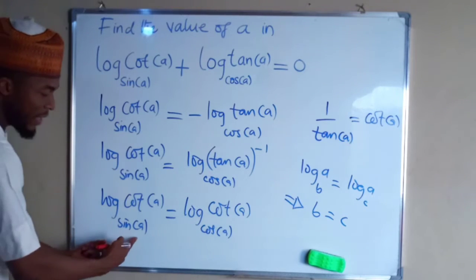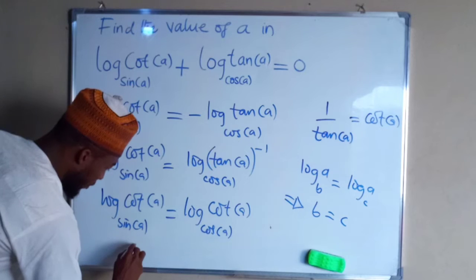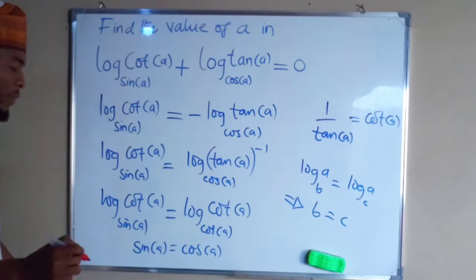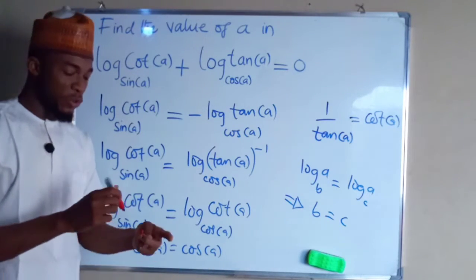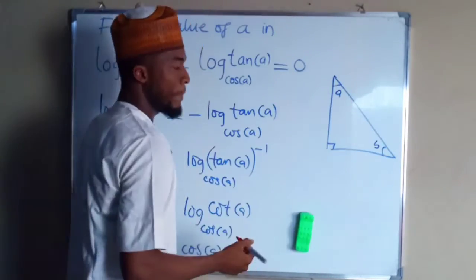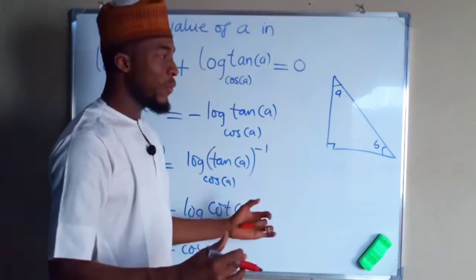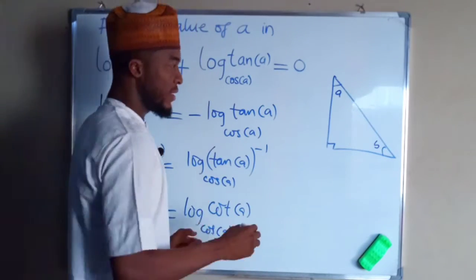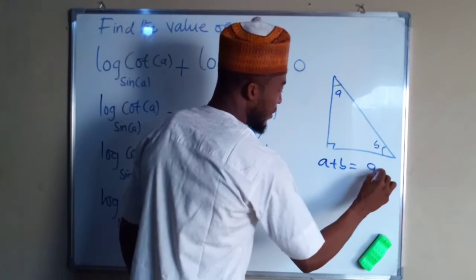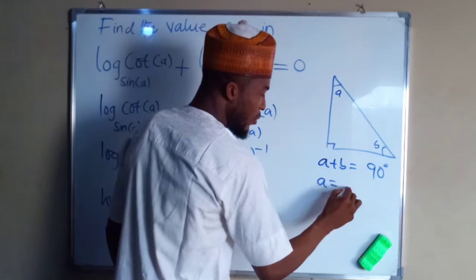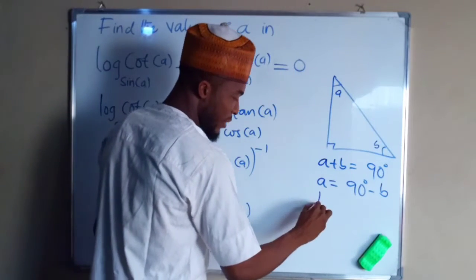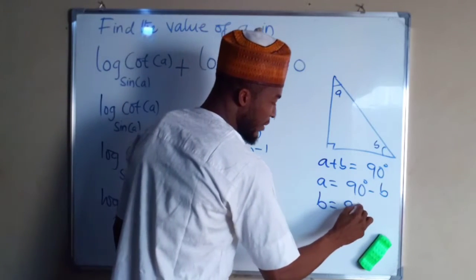Therefore, sine A is the same thing as cos A. How is it possible for sine A to be equal to cos A? Well, in a right-angle triangle, these two angles are complementary, and if you add complementary angles together you obtain 90 degrees. So A plus B equals 90 degrees, therefore A equals 90 degrees minus B, and at the same time B equals 90 degrees minus A.